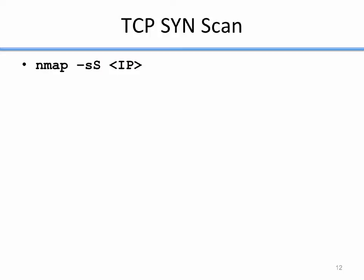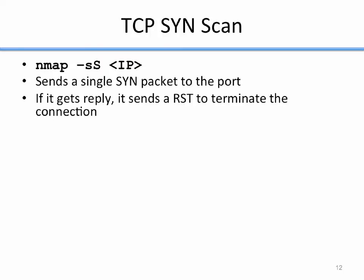The next type is a SYN scan — named because it involves sending a SYN packet. The command-line argument is '-sS'. It sends a single SYN packet to the port being scanned. If it gets a reply, it sends a reset to terminate the connection. A SYN scan does not complete the three-way handshake: it sends the SYN, the server may reply with a SYN-ACK, and then NMAP immediately sends a reset.